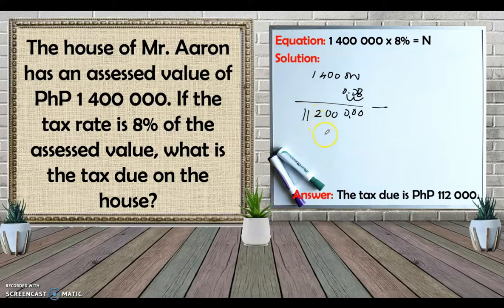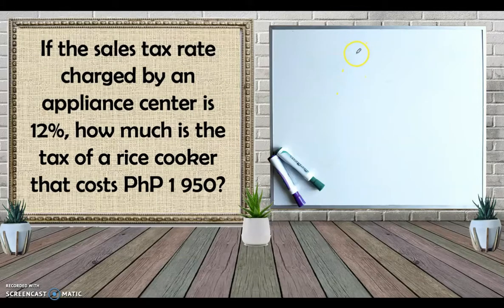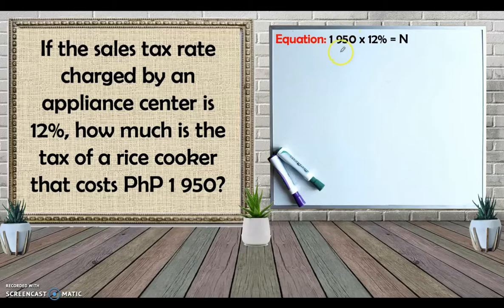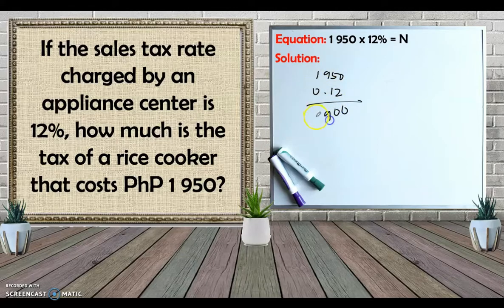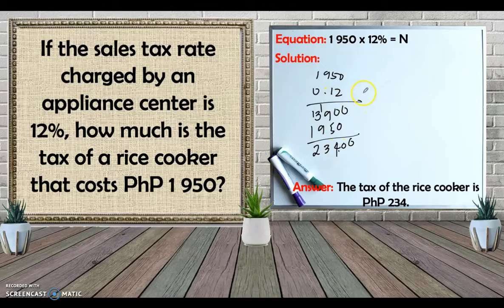Counting the decimal places, the tax due on the house is 112,000 pesos. Next example: If the sales tax rate charged by an appliance center is 12%, how much is the tax on a rice cooker that costs 1,950 pesos? Using the percentage formula, we multiply 1,950 times 12% (0.12). Working through the multiplication and counting the decimal places, the tax on the rice cooker is 234 pesos.